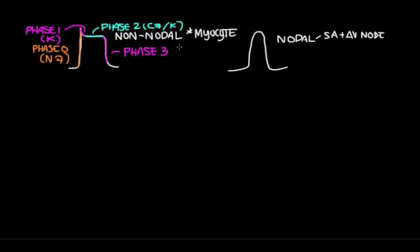Phase 3 is this decline in voltage — a repolarization phase caused by a lot of potassium channels being opened — which brings us down to baseline. That's phase 4, which is your resting membrane potential, and it is mediated by the cell being freely permeable or open to potassium. That's the action potential for a non-nodal cell, meaning a cardiac myocyte or cardiac muscle cell.